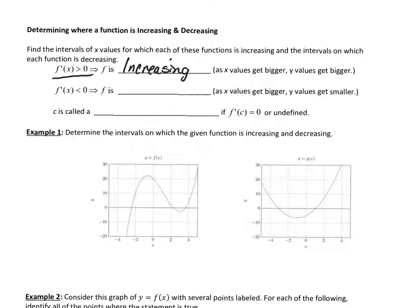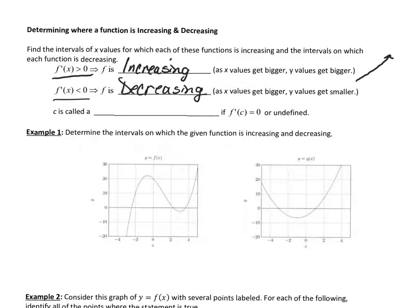Increasing means as the x's get bigger, the y's get bigger. If that first derivative is negative, then your function is decreasing — as x's get bigger, the y's are going down. Where those two behaviors change is called a critical value.